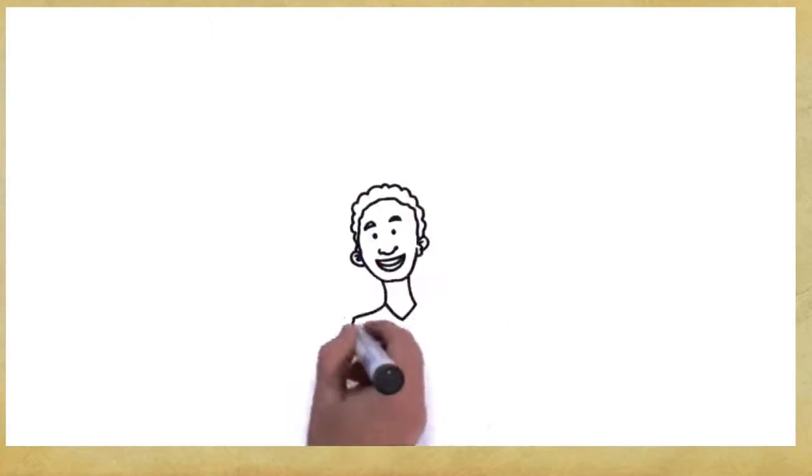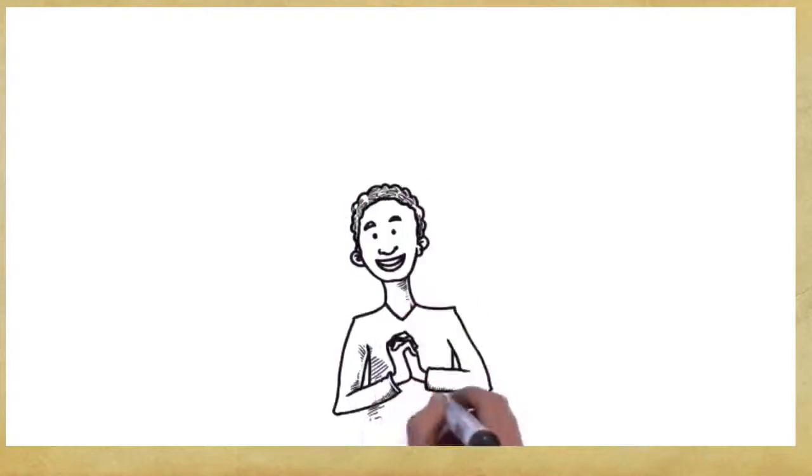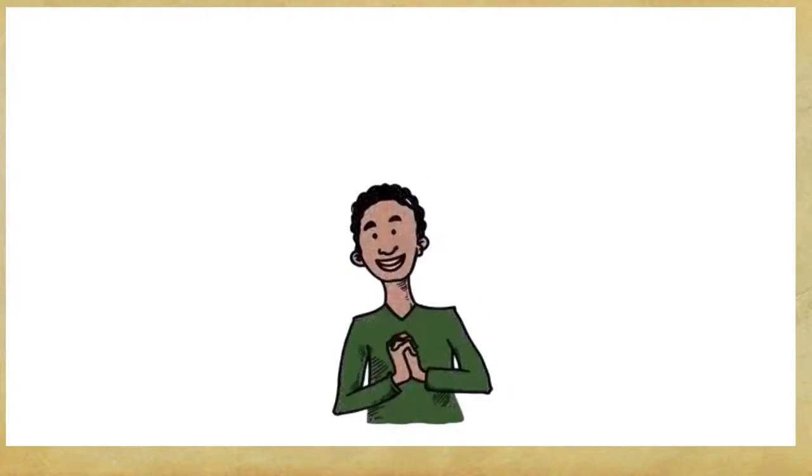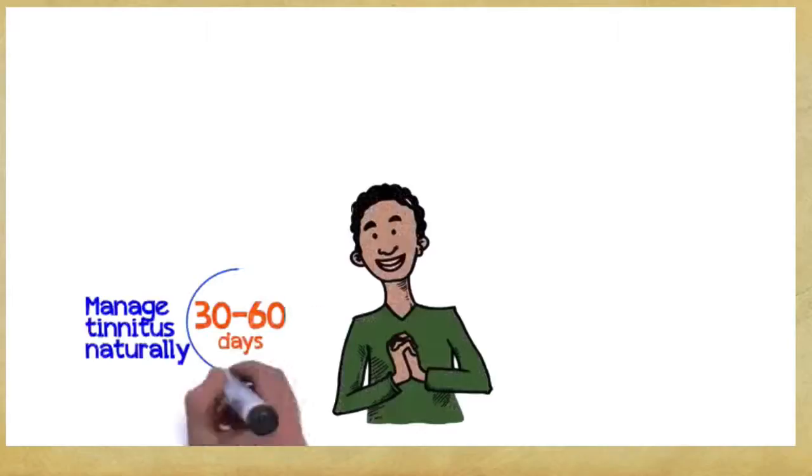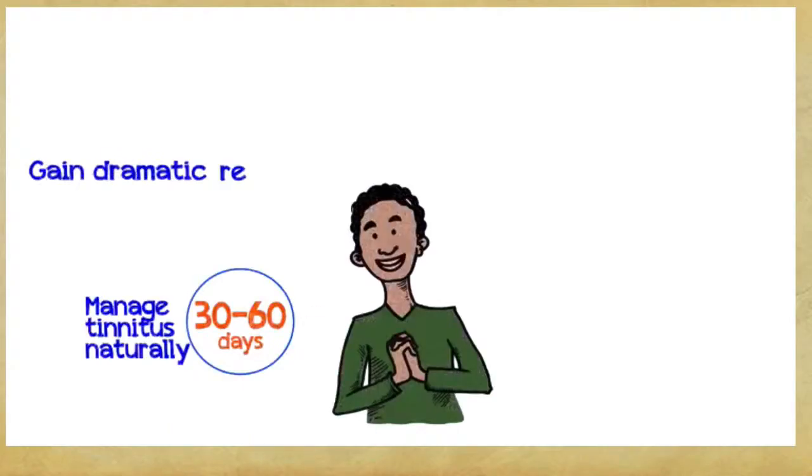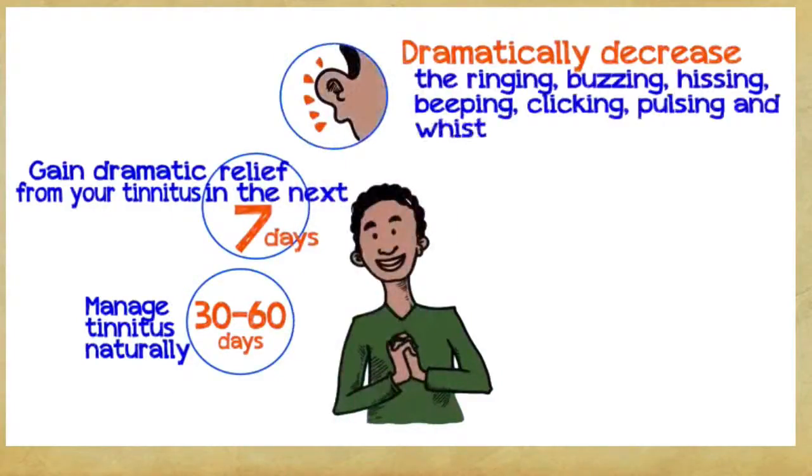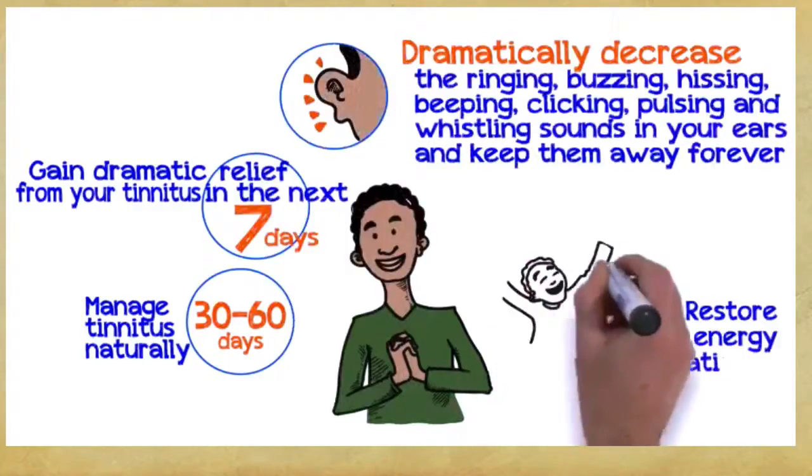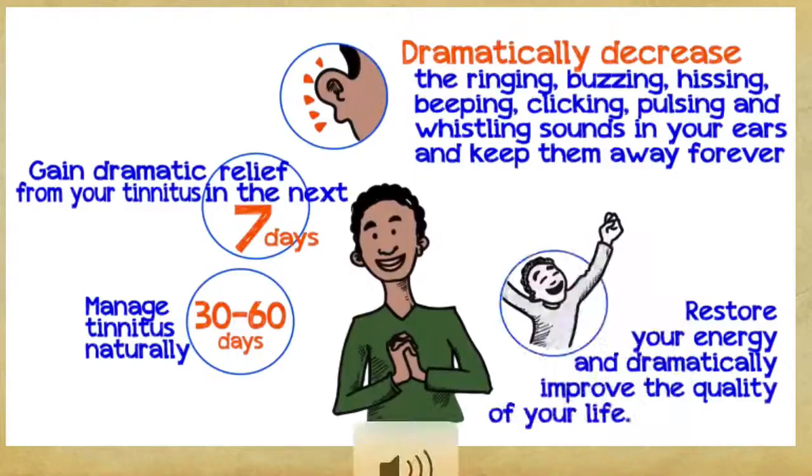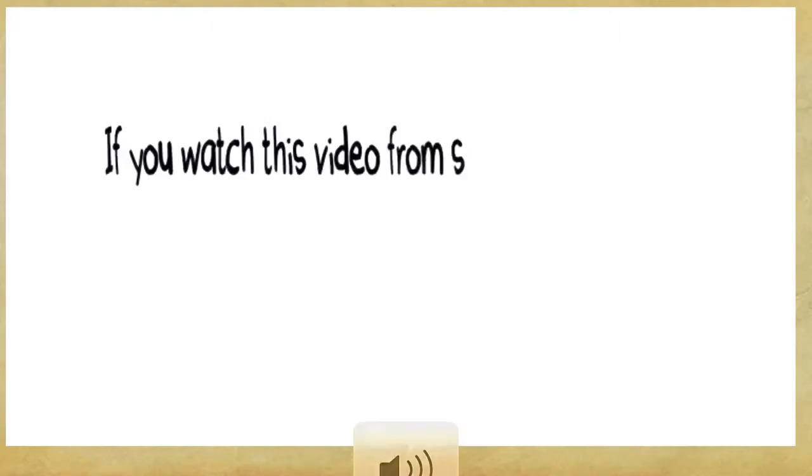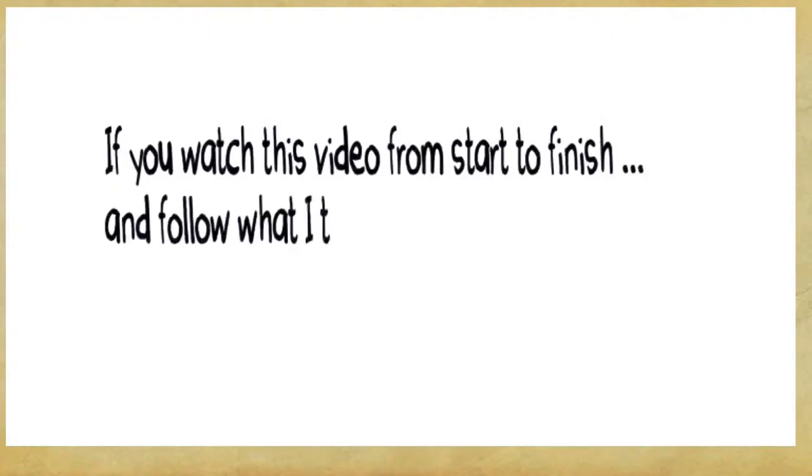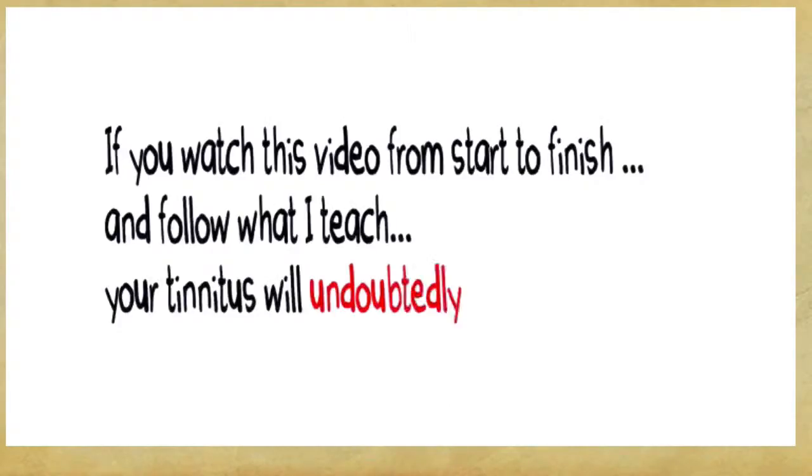So, what can you gain if you embrace these three easy principles? Well, you can manage tinnitus naturally within 30 to 60 days, gain dramatic relief from your tinnitus within the next seven days, dramatically decrease the ringing, buzzing, hissing, beeping, clicking, pulsing, and whistling sounds in your ears and keep them away forever. Restore your energy and dramatically improve the quality of your life, guaranteed. Let me reiterate, if you watch this video from start to finish and follow what I teach, your tinnitus will undoubtedly start to fade away.